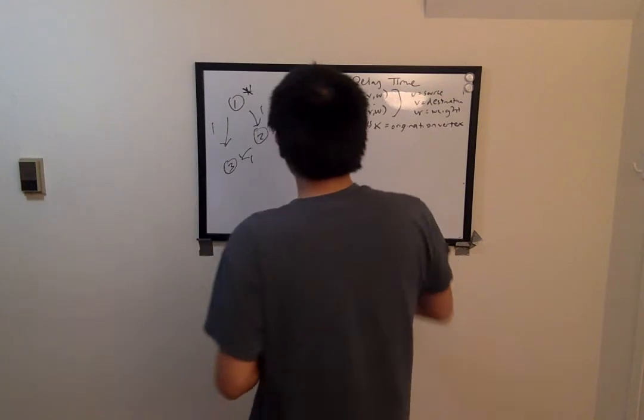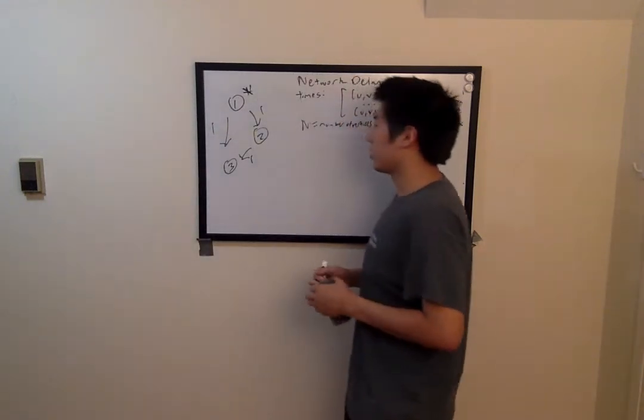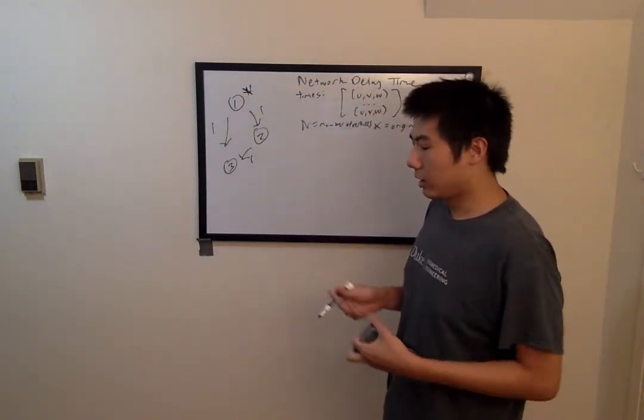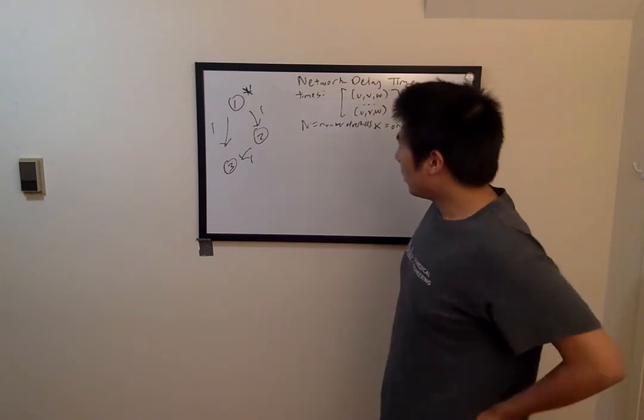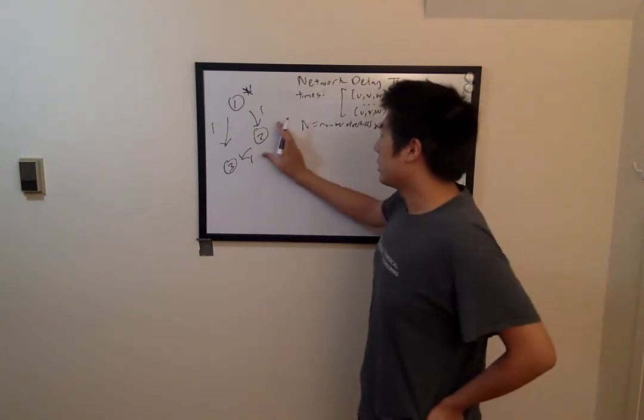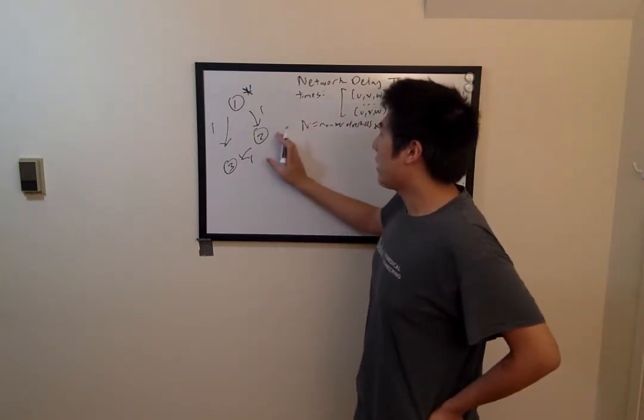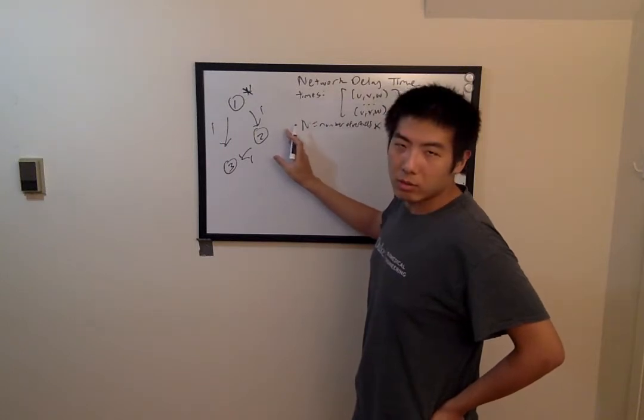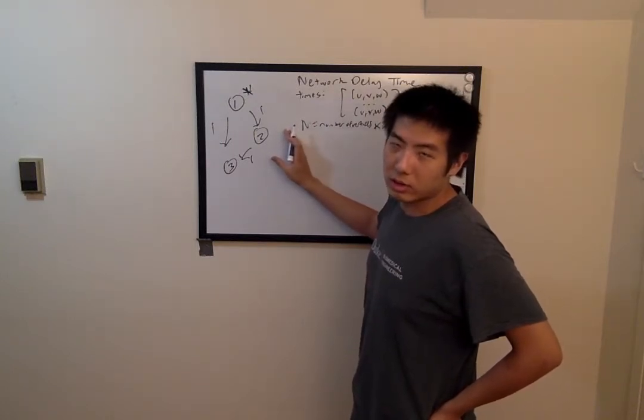So now that we understand the problem, let's talk about how to solve it efficiently. So one thing that you'll notice is that if you had the shortest path from the source vertex to all vertices in the graph,